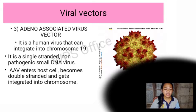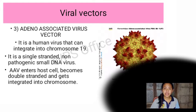The third viral vector is the adeno-associated virus (AAV) vector. It is a human virus that can integrate into chromosome 19. It is a single-stranded, non-pathogenic, small DNA virus. AAV enters the host cell, becomes double-stranded, and gets integrated into the chromosome.